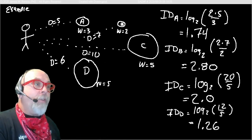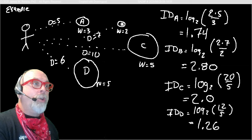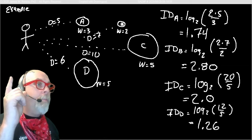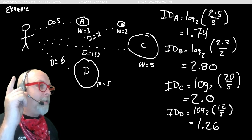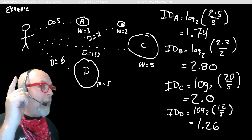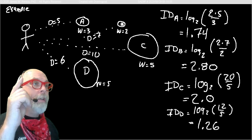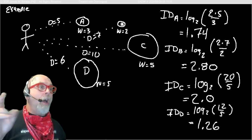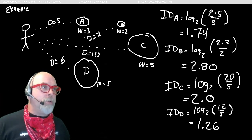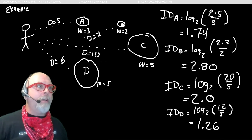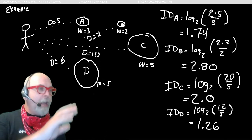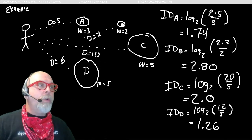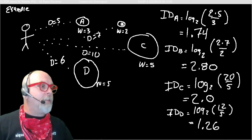So stick figure man there, or stick figure human there, would be able to grab object D first, A second, C third, and B would take the longest for stick figure human to acquire the target, or to pick up that object. Kind of neat to think about that we can algorithmically come up with some numbers and make predictions about which would be the fastest, which would be the slowest.